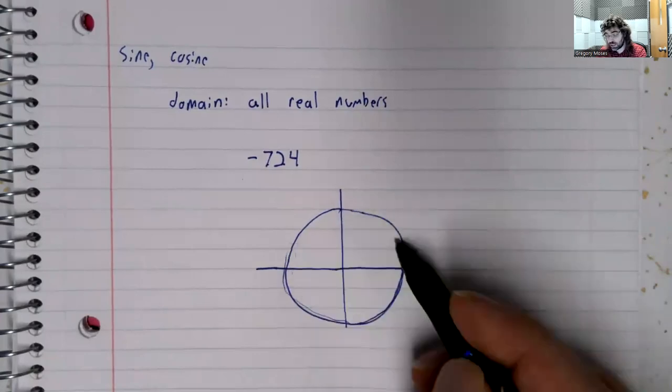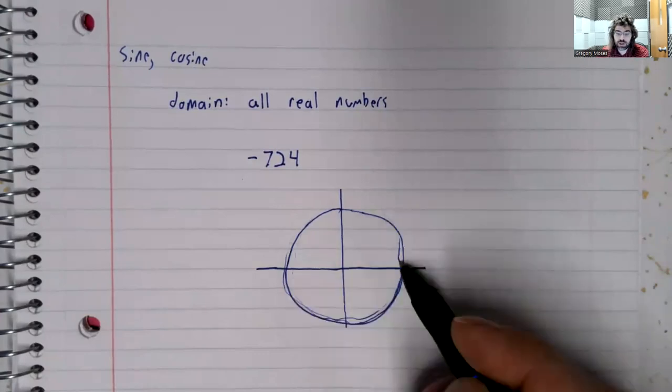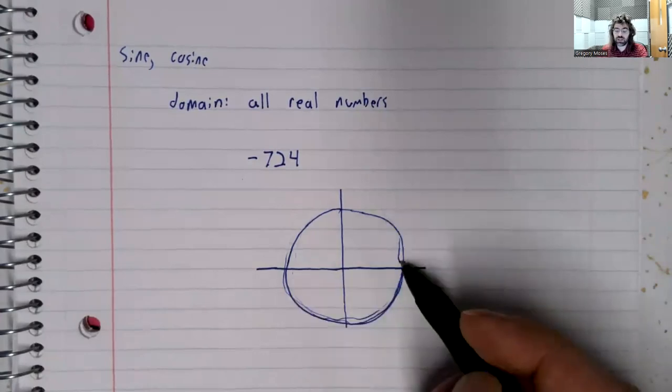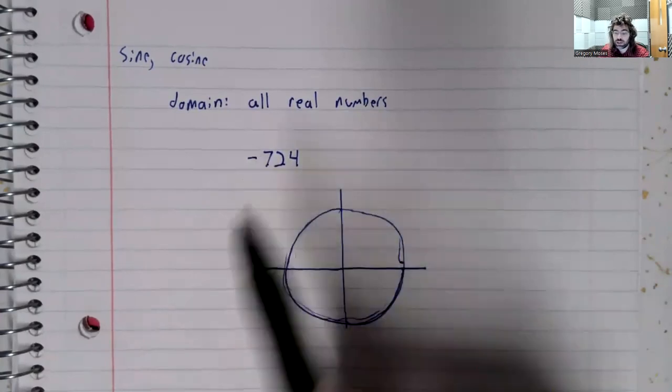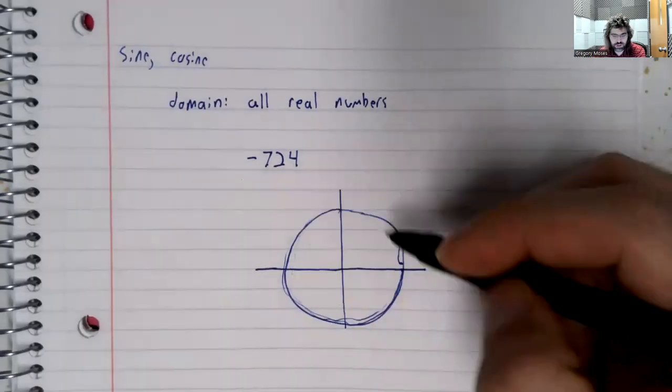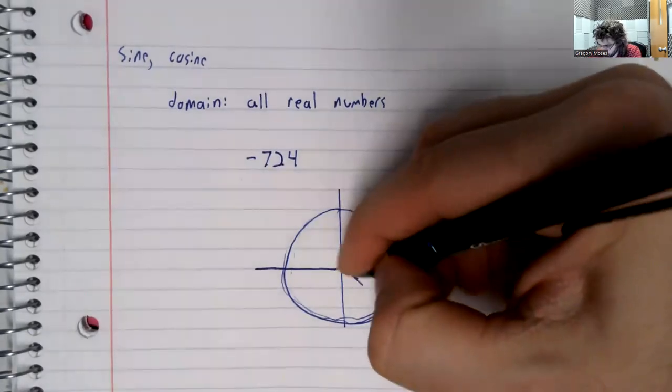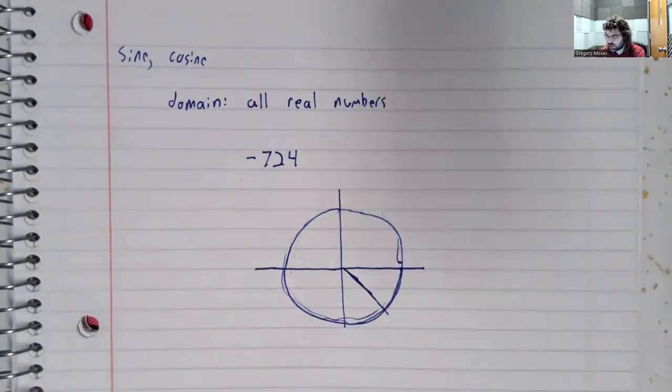6 pi radians. We're going clockwise because of this negative here. And we go around 724 radians. After 724 radians, clockwise, we wind up around here.